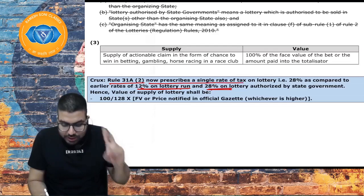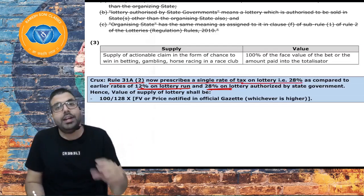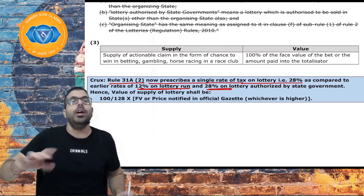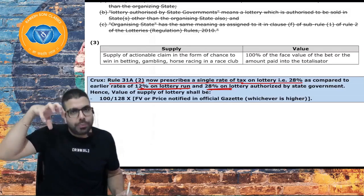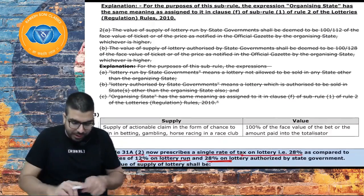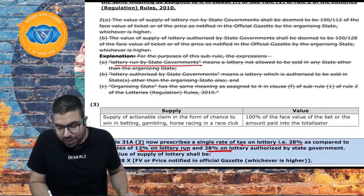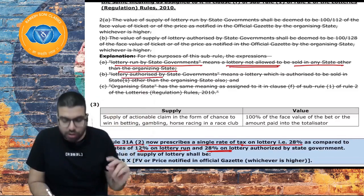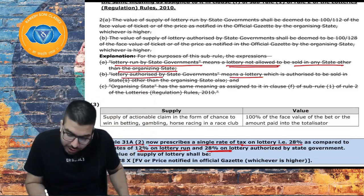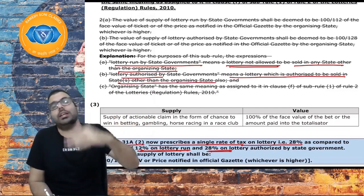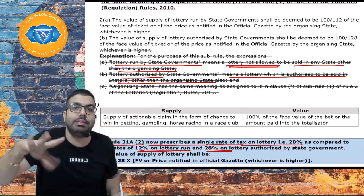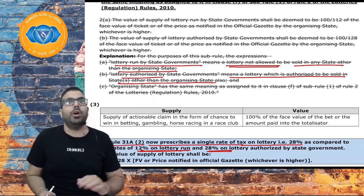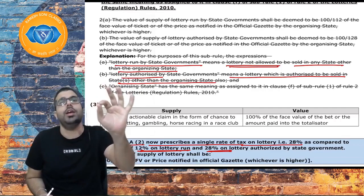Rule 31A sub-rule 2 now prescribes a single rate of tax on lottery — 28% — as compared to the earlier rate of 12% on lottery run by the state. State-run lottery means the lottery not allowed to be sold in any other state. State-authorized lottery means a lottery authorized to be sold in other states. Now all lotteries pay one uniform rate of 28%.